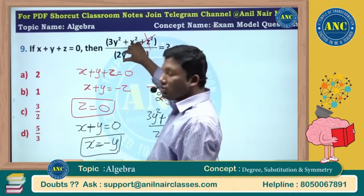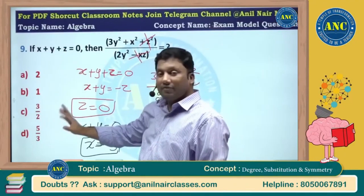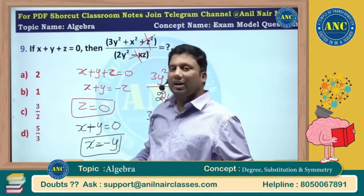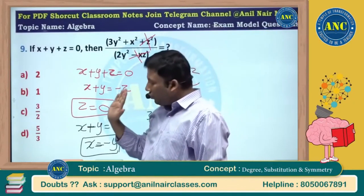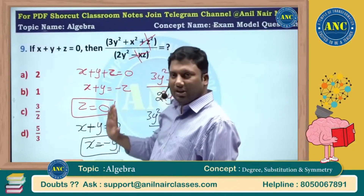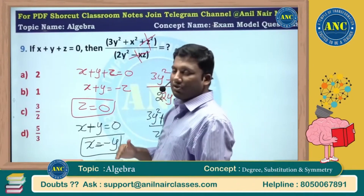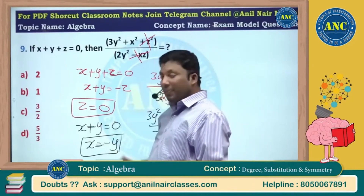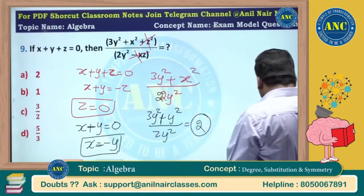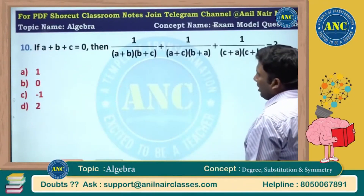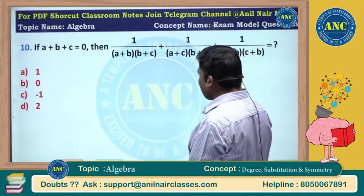The degrees are 2, 2 and the answer degree is 0 — all constants. Values like 2, 1, 3/2, 5/3 are not possible as degree results, which is why the substitution method is used. To simplify further, the dependent variable concept is applied.